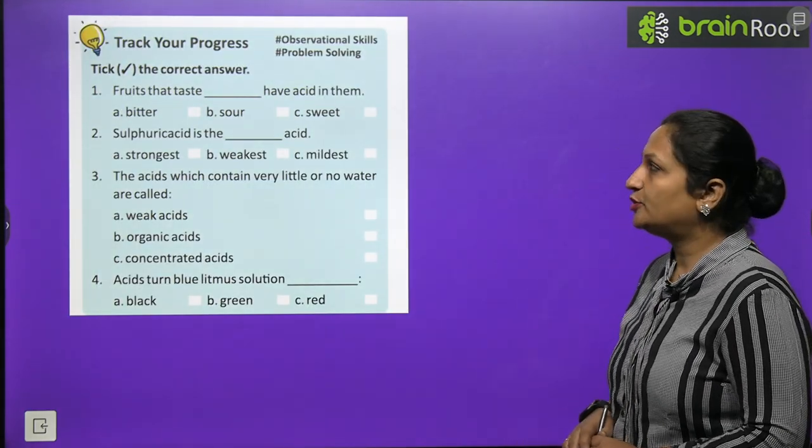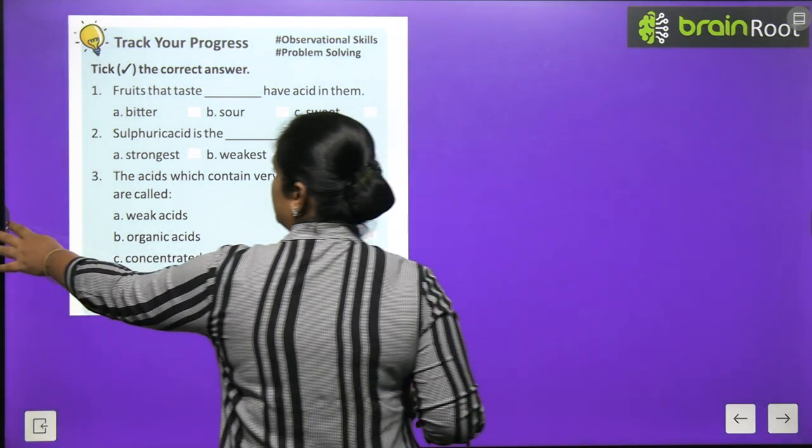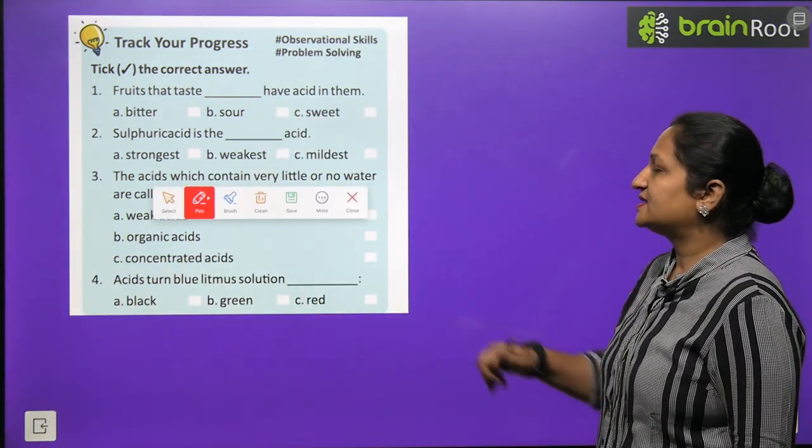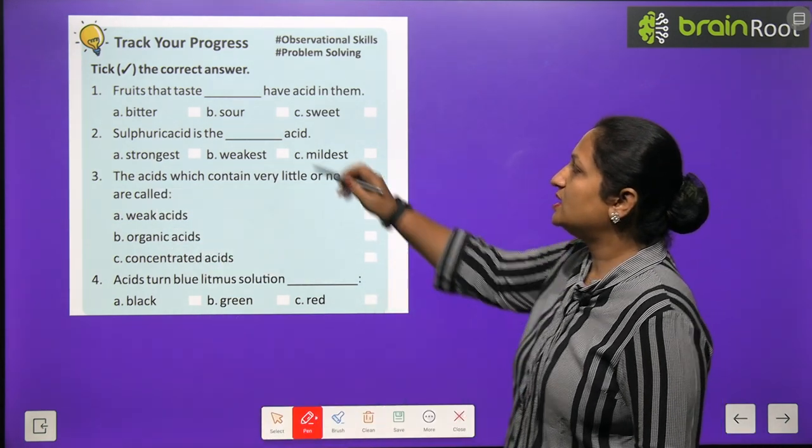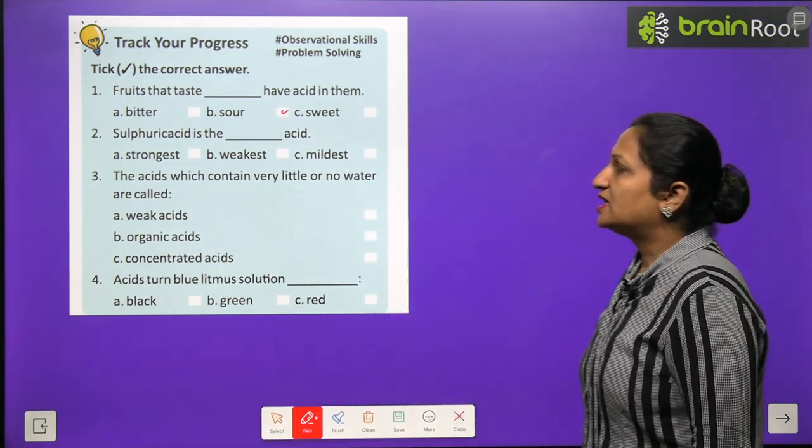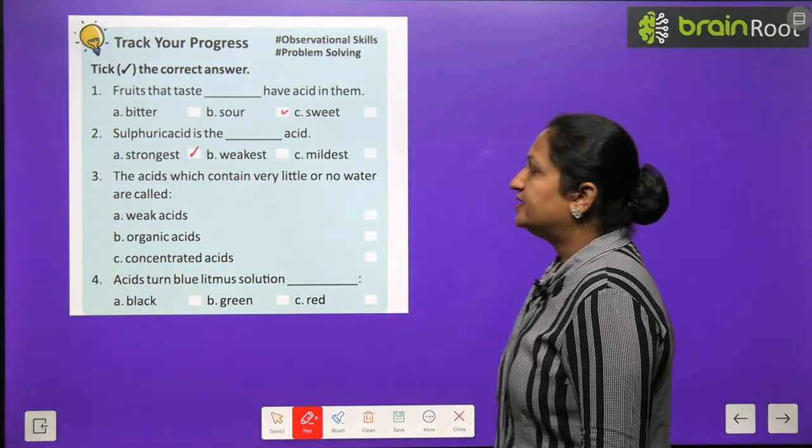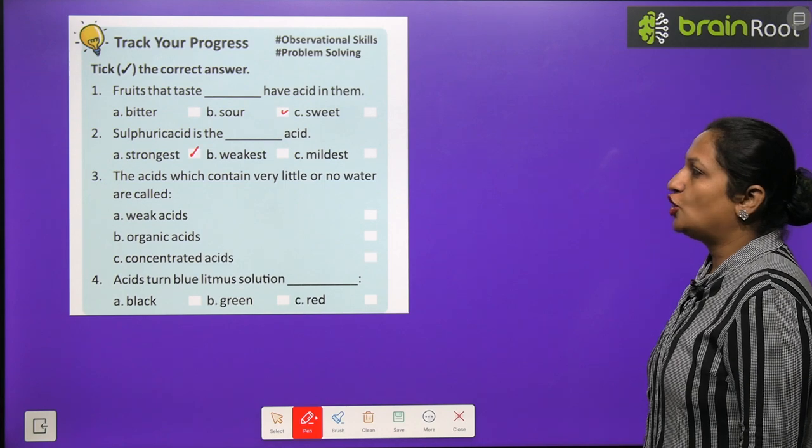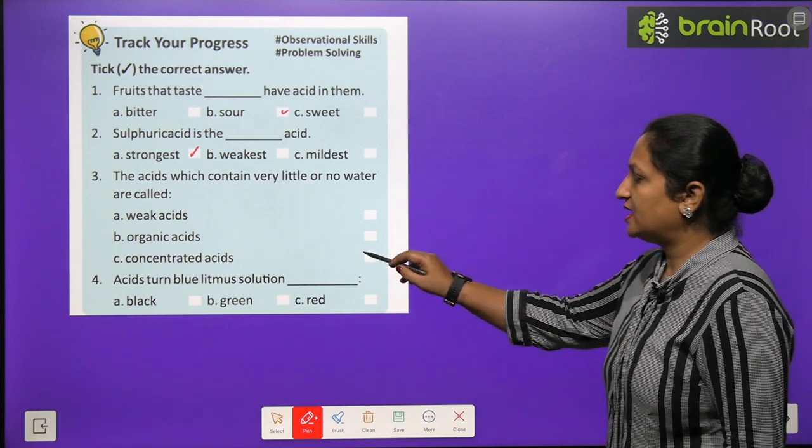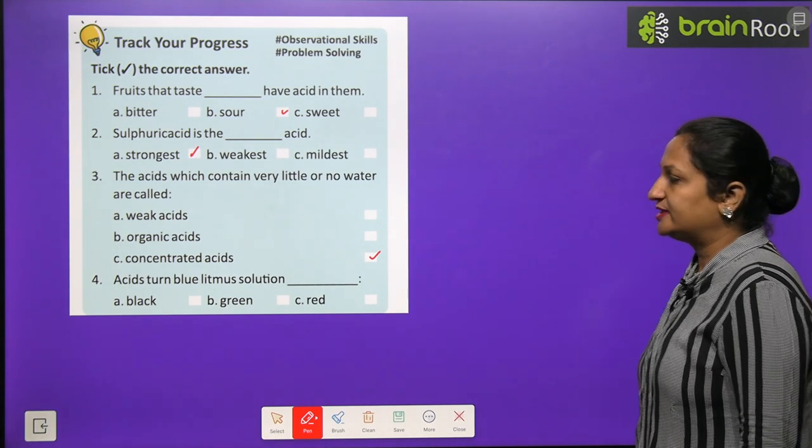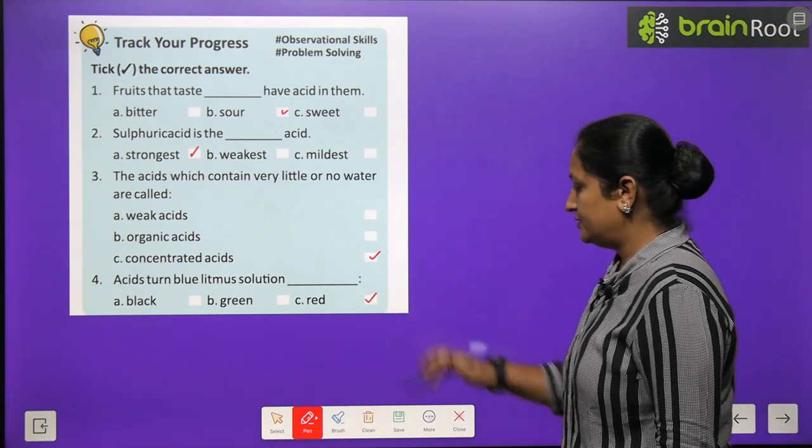We have done neutralization reaction here. We reacted sodium hydroxide with hydrochloric acid. What was formed? NaCl, which is our salt, sodium chloride, along with water. If the above experiment is repeated with another base, if you take KOH, that means potassium hydroxide, and sulfuric acid together, they will again result in formation of a salt called potassium sulfate and water is liberated. Track your progress, children. Fruits that taste sour have acids in them. Sulfuric acid is the strongest acid. The acids which contain little or no water are called concentrated acids. Acid turns blue litmus red.